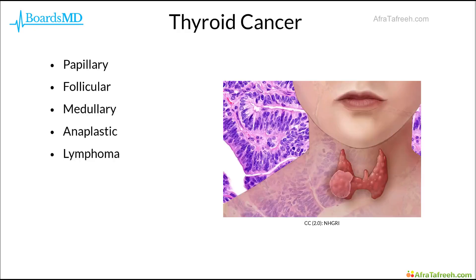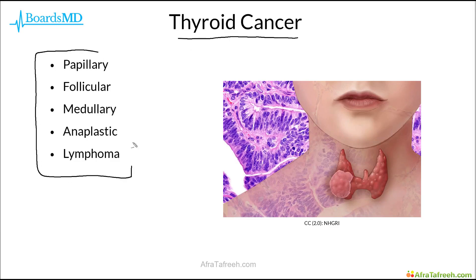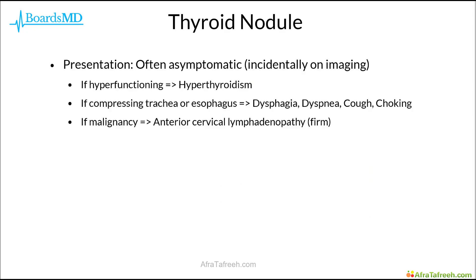As we work through this series, make sure to keep in the back of your mind why we are working up these thyroid nodules in the first place. Ultimately, what we are most concerned about and trying to rule out is the presence of thyroid cancer. We discussed these specific types of thyroid cancers in a separate module, but I'd just like to have you keep this framework in the back of your mind as we work through this thyroid nodule algorithm.